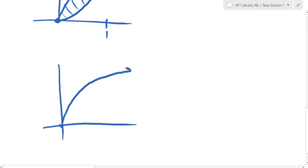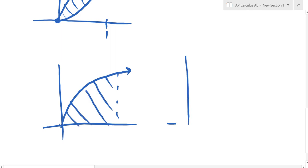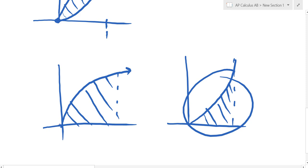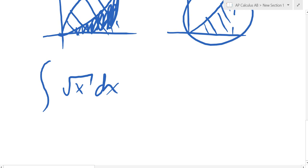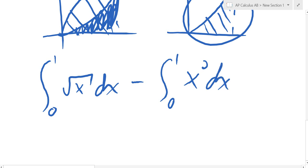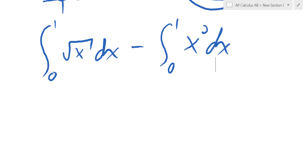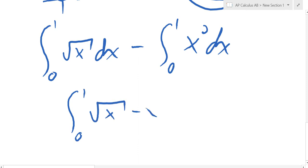If I find the area under root x from 0 to 1, that's one area. And if I find the area under x squared from 0 to 1, that's another. If I subtract this area from that one, I get the area I'm looking for. Usually you don't do two separate integrals since both go from 0 to 1 — you just write it as one integral from 0 to 1 of root x minus x squared.